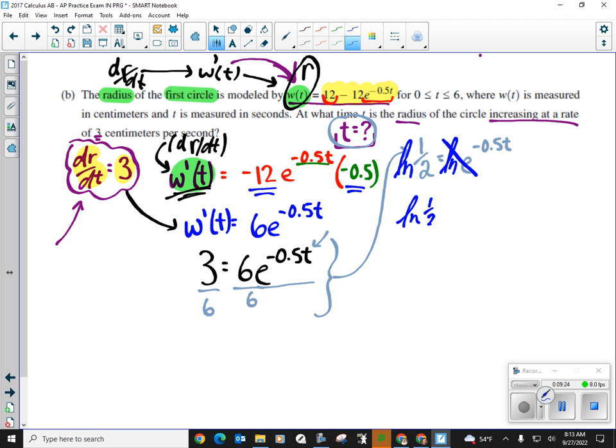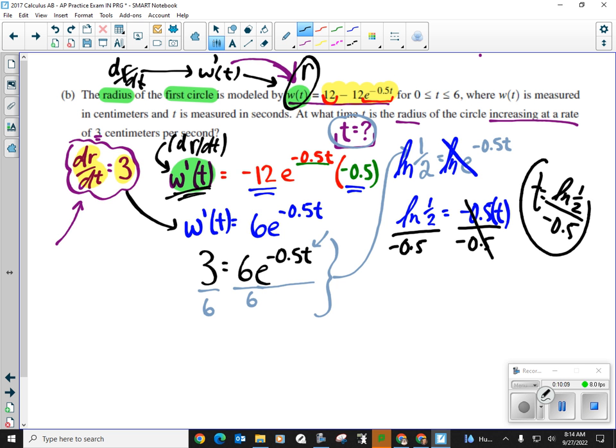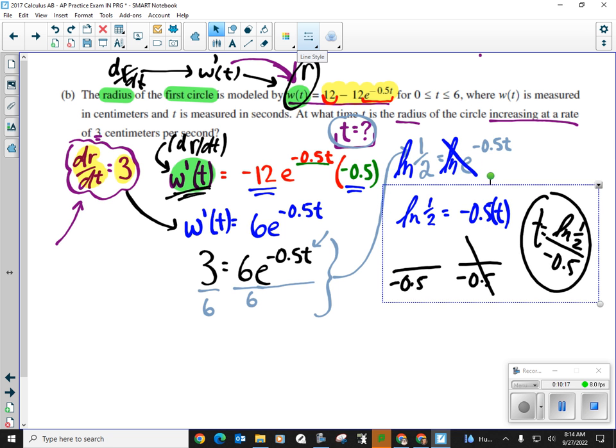So the L N of 1 half equals negative 0.5 t. I mean, it's not too bad. Not too bad. According to our rules, I'm going to make it a little bit easier. I know you want to just divide both sides by negative 0.5, and you can. At this point, I could divide both sides by negative 0.5, because they never tell you to simplify or whatever terms. I can say time would be the L N of 1 half over negative 0.5. That would be an answer, a legit answer. But on the answer key, if you were to check this, it wouldn't look like that. How come?